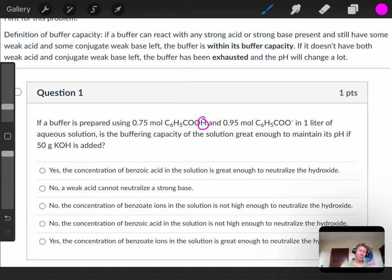Up top here, we've got a hint with the definition of buffer capacity. If a buffer can react with any strong acid or strong base present and still have some weak acid and some conjugate weak base left, the buffer is within its buffer capacity. If that doesn't happen, the buffer is exhausted and the pH will change a lot.